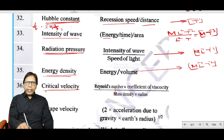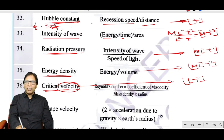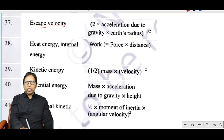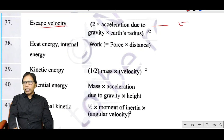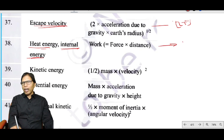Critical velocity and escape velocity both have the same dimension as velocity: LT⁻¹. Heat energy, internal energy, and work done all have the same dimension as work: ML²T⁻².